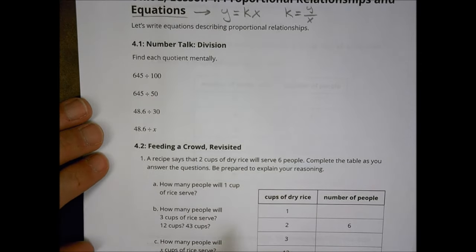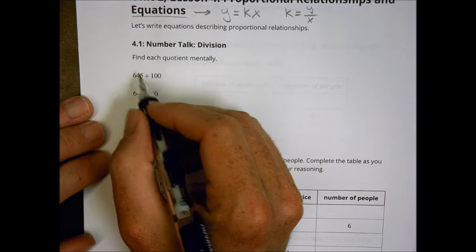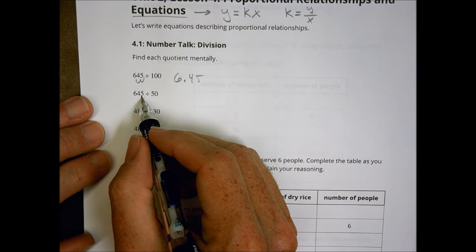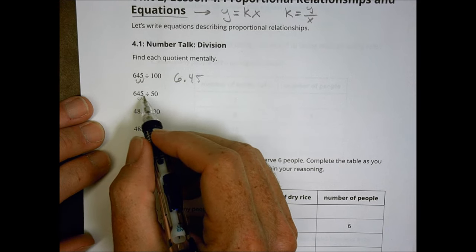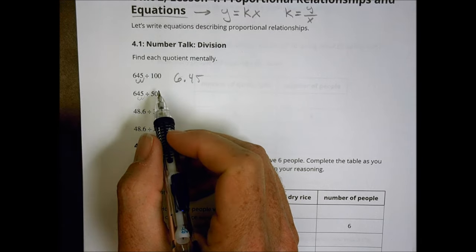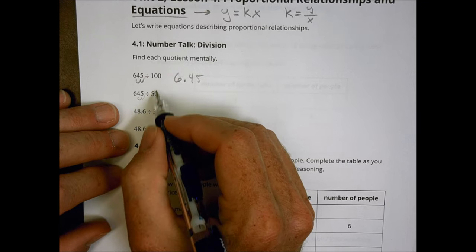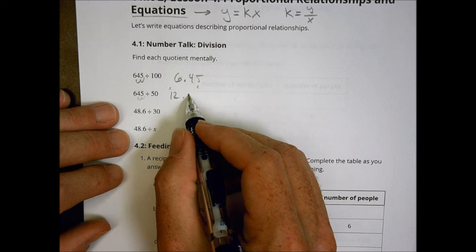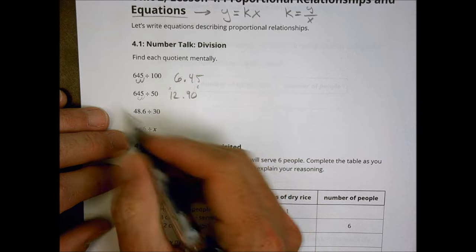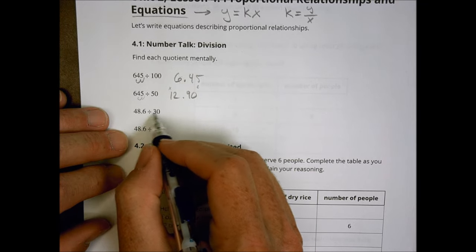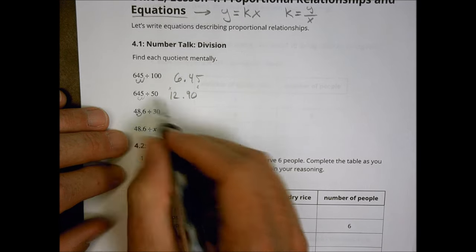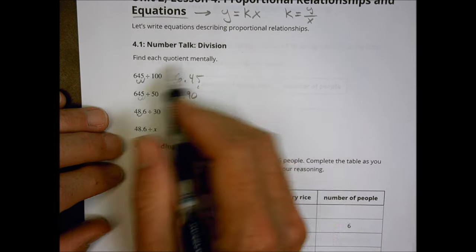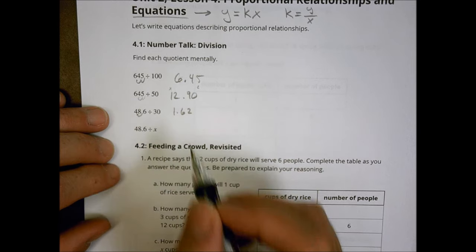First of all, number talk, you do some division, solving some things mentally. When I'm multiplying or dividing by a hundred, I'm going to be moving a decimal over two spots. So you end up with 6.45. If I'm going to move it over two spots, that's great. And then I'm going to basically double it because here I did it in a hundred, here's 50. So if I take this number and I actually multiply by 2, I end up with 6 doubled is 12, 45 doubled is 90. Just some mental math there.